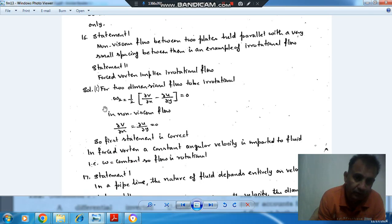So here, for irrotational flow, we should have omega Z equal to 0, and omega Z is 1 by 2 times del V by del X minus del U by del Y.